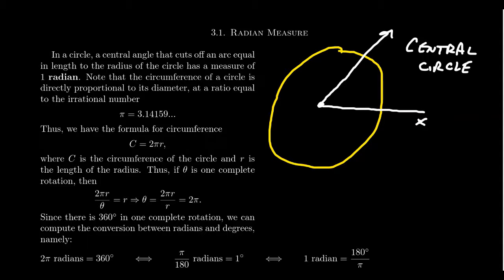In a circle, a central angle that cuts off an arc—so this is what we mean by an arc, this little piece on the circle itself that's cut off by the angle. We say that the arc is equal in length to the radius of the circle if the arc is equal to the radius of the circle.